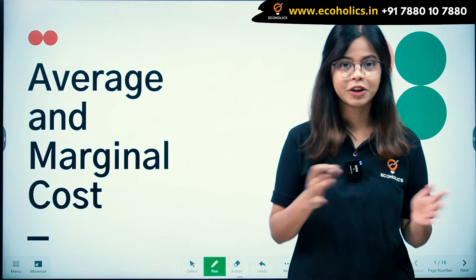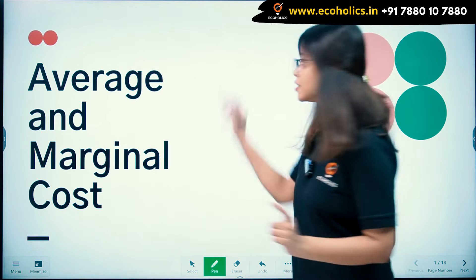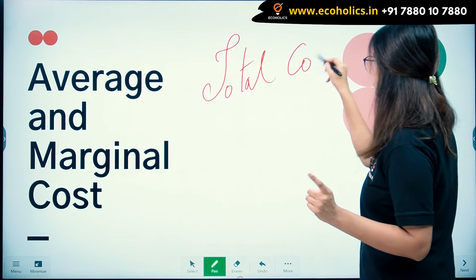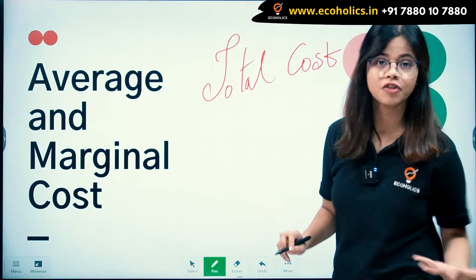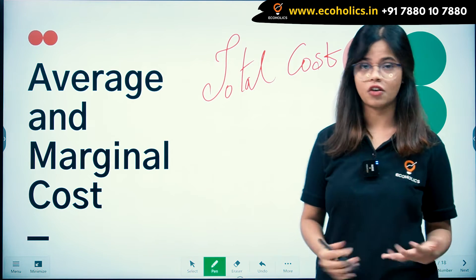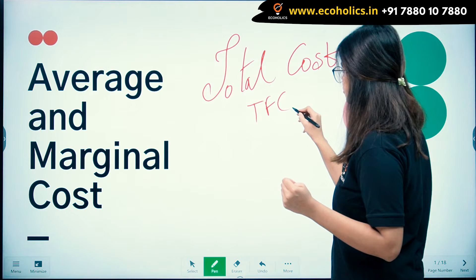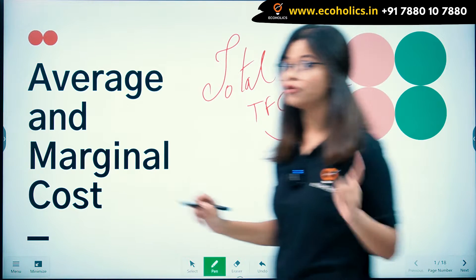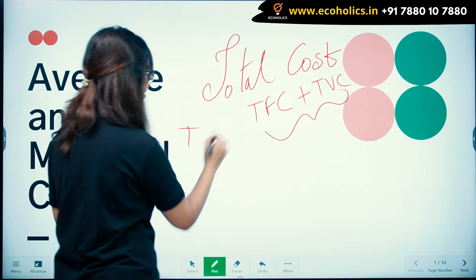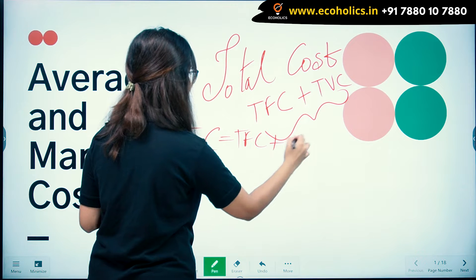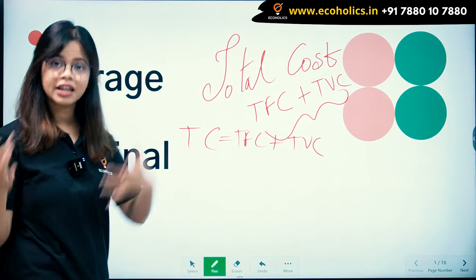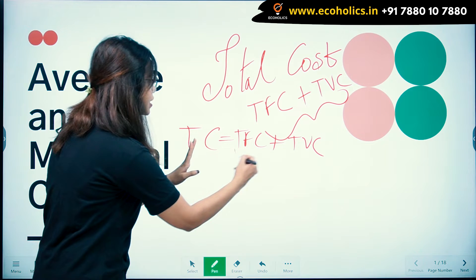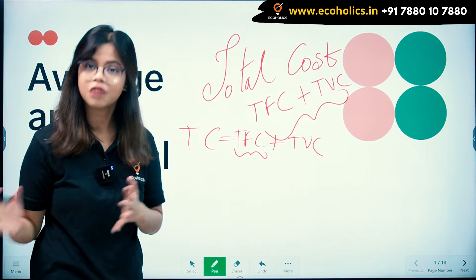Hello and welcome to Ecaholics. In our previous video, we had learned the concept of total cost. We understood that the formula of total cost is: Total Cost equals TFC plus TVC. Any fluctuation in total cost is solely because of total variable cost, because TFC remains constant at all levels of output.